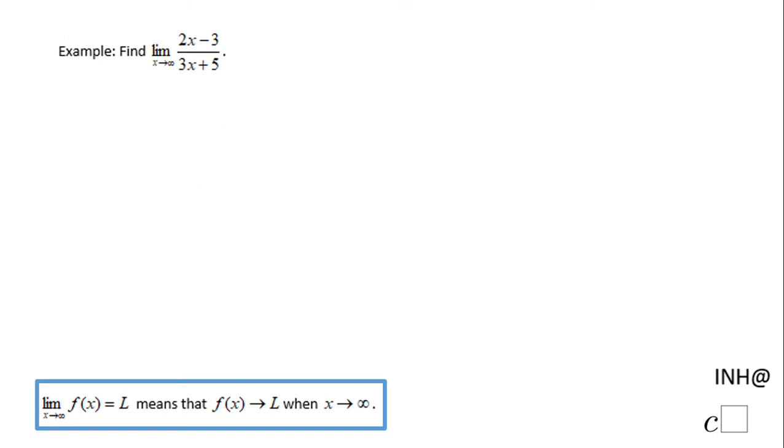Welcome back to INeedHelpAtCSquare. In this example we have to find the limit as x approaches infinity of (2x - 3)/(3x + 5). If you replace x with infinity, you get what we call an indeterminate form: infinity over infinity. So we have to use a different way to find this limit.